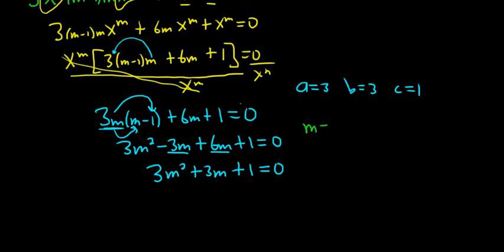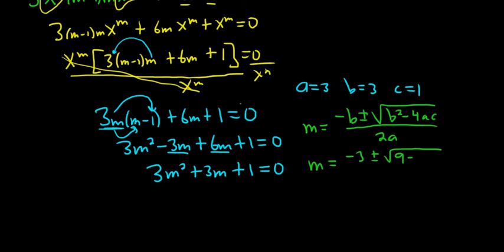says that m is negative b plus or minus the square root of b squared minus 4ac all over 2a. So m is equal to negative 3 plus or minus the square root. 9 and then 4 times 3 is 12. So we just get negative 3 all over 6.